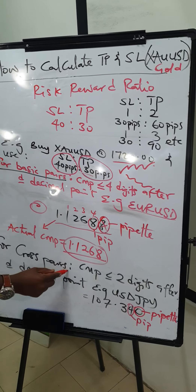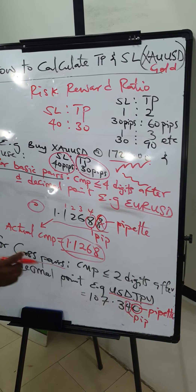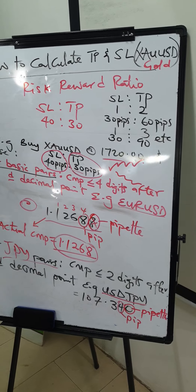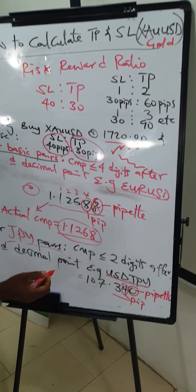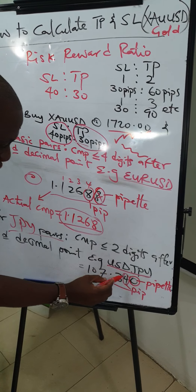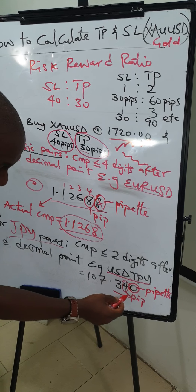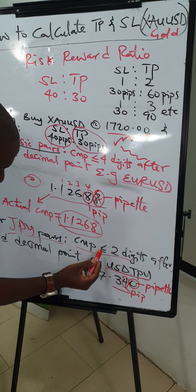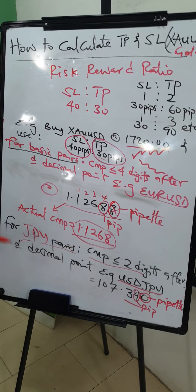For JPY pairs, they always have three digits after the decimal point. For example, USD/JPY — the current market price might be 107.340. The third digit after the decimal is the pipette, while the second digit is the pip. So for JPY pairs, the current market price is generally less than or equal to two digits after the decimal point.